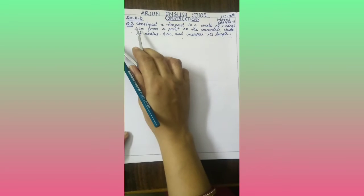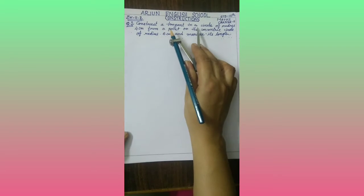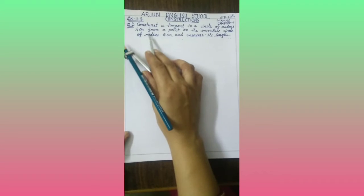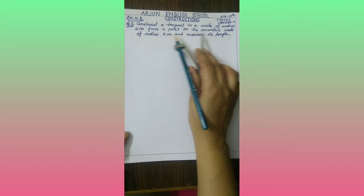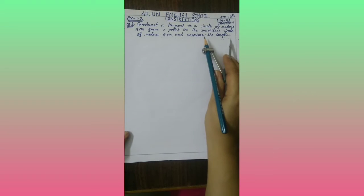Dear students, now let us see question number 2 from exercise 11.2. In this question, construct a tangent to a circle of radius 4 cm from a point on the concentric circle of radius 6 cm and measure its length.